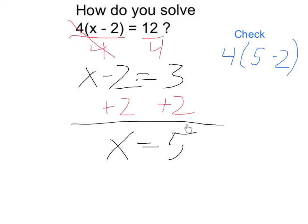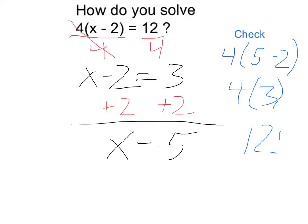And quickly check that by plugging the 5 into the original equation: 4 times x minus 2, and I want to see if that's equal to 12. Looking at it, 5 minus 2 is equal to 3, so this is equal to 4 times 3, which is equal to 12. So it does work.